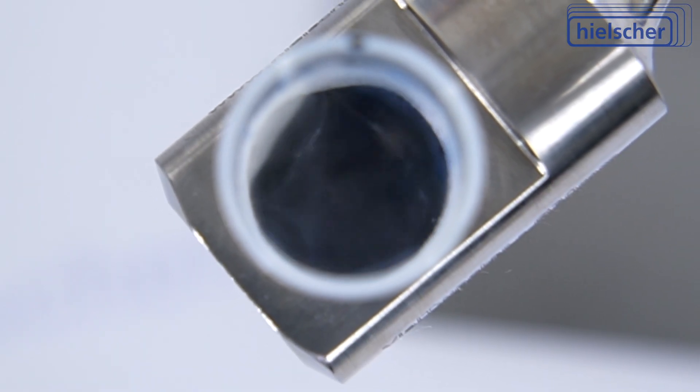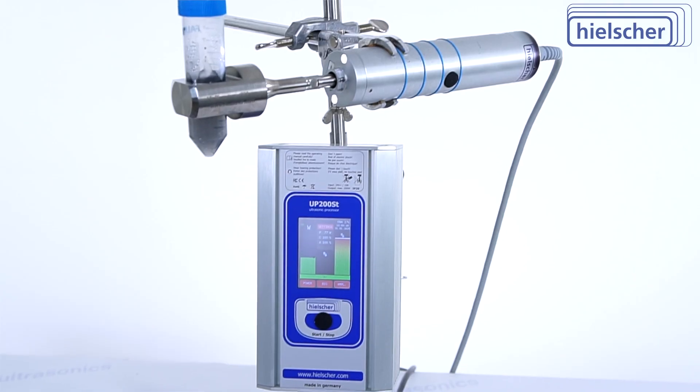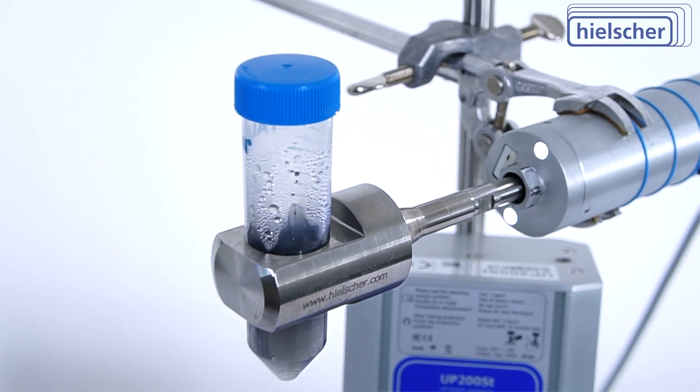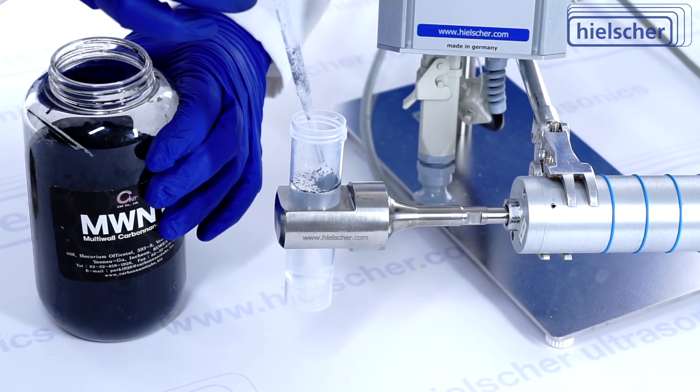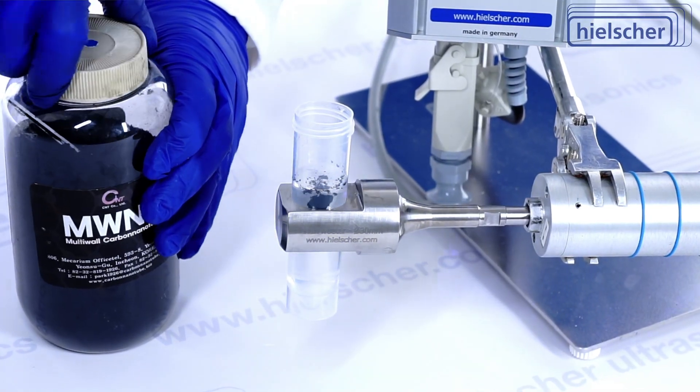The Vial Tweeter's ultrasound intensity also excels at nanoparticle dispersion. Metal oxides, carbon nanotubes, or polymer-based particles often form tight agglomerates. Inside a sealed falcon tube, the focused ultrasonic cavitation breaks these aggregates into uniform suspensions.